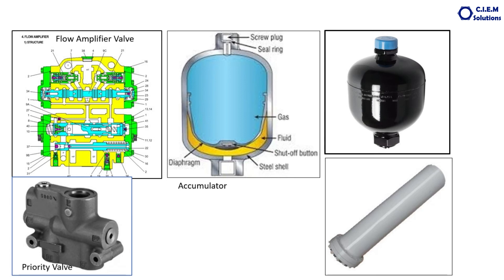There is also a priority valve. Since steering is a safety concern, the first priority is given to the steering. Oil comes from the steering pump and also from the implement hydraulic pump — implements being the bucket rising or tilting for loaders, or dump body hoisting and lowering for dumpers. If the oil quantity in the steering system is low, oil from the implements is diverted through this priority valve to the steering circuit.